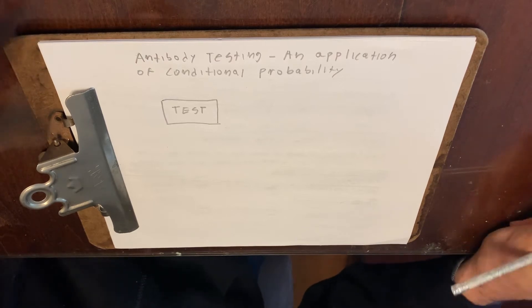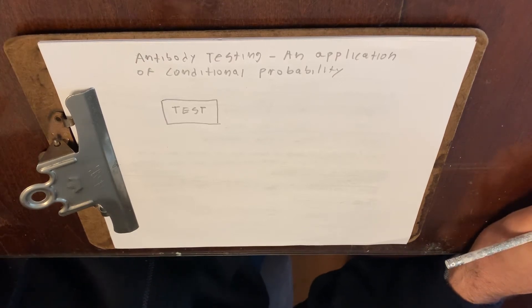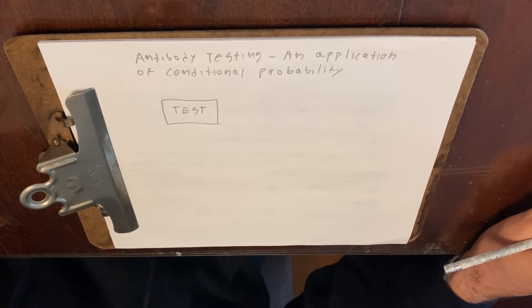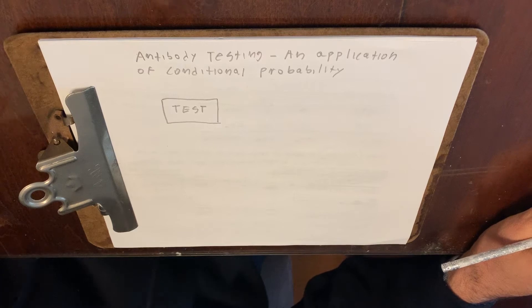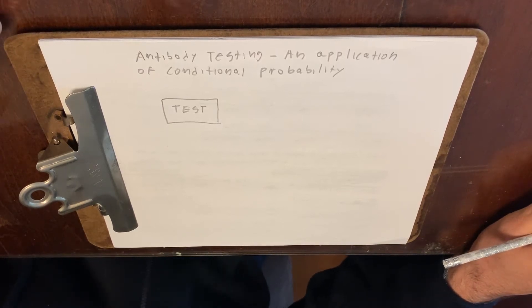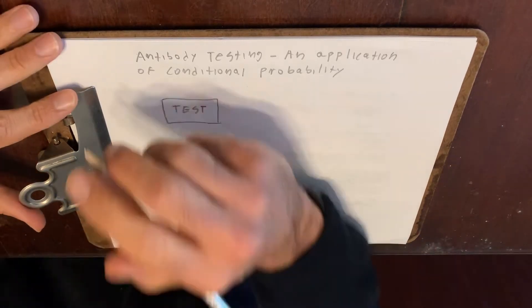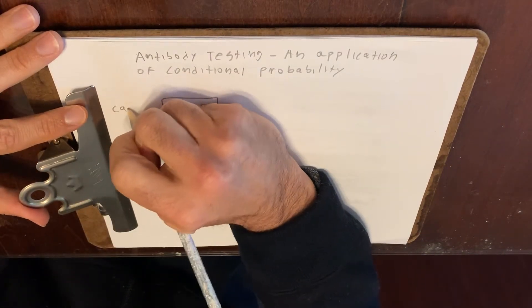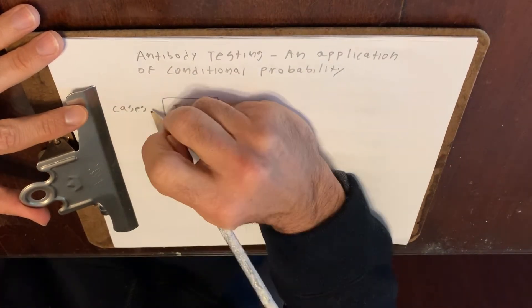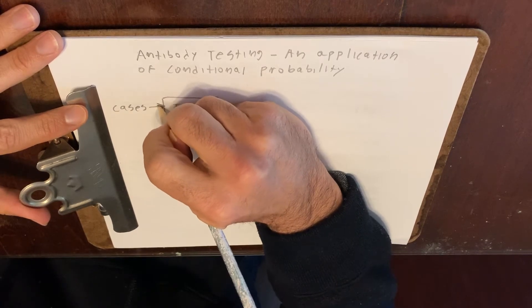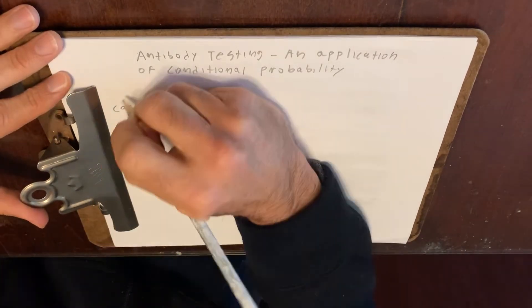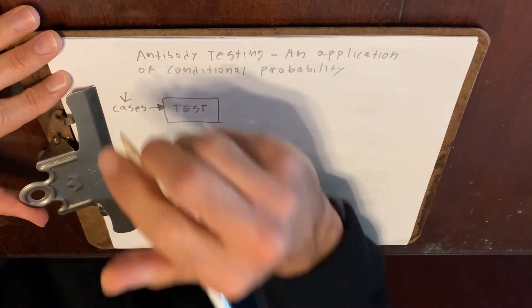So what we have to do with the test is we have to test the test. What does it mean to test the test? We have to test the accuracy of the test. But what does it mean to test the accuracy of the test? We have to give cases and put cases into the test. A case is somebody who had the infection.